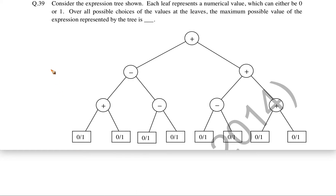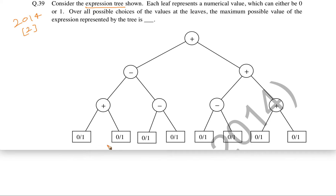Now let us see this question. This question came in GATE 2014 for 2 marks. The question is: consider the expression tree shown below. Each leaf in this expression tree represents a numeric value which is either 0 or 1. We have to find the overall maximum possible value which can be found from this expression tree, given that each of the leaves can be either 0 or 1.